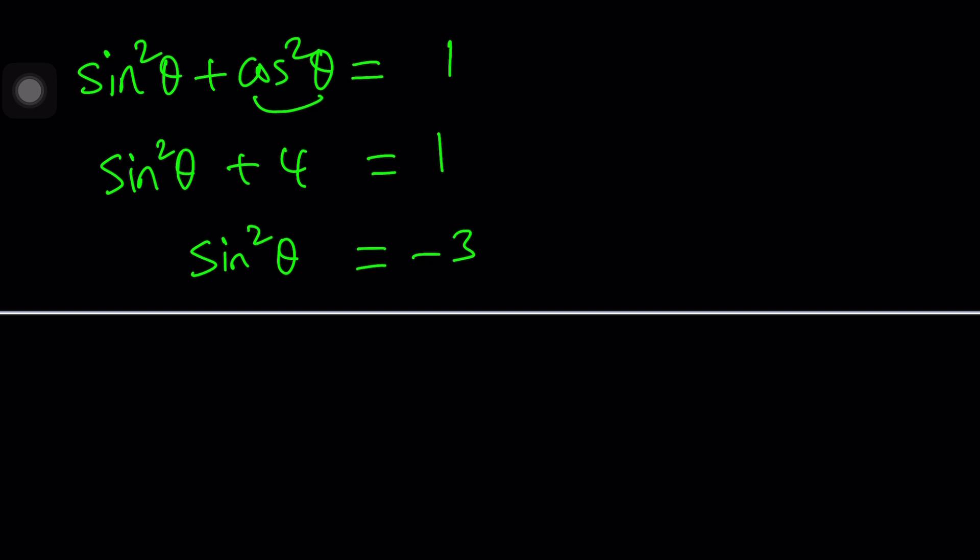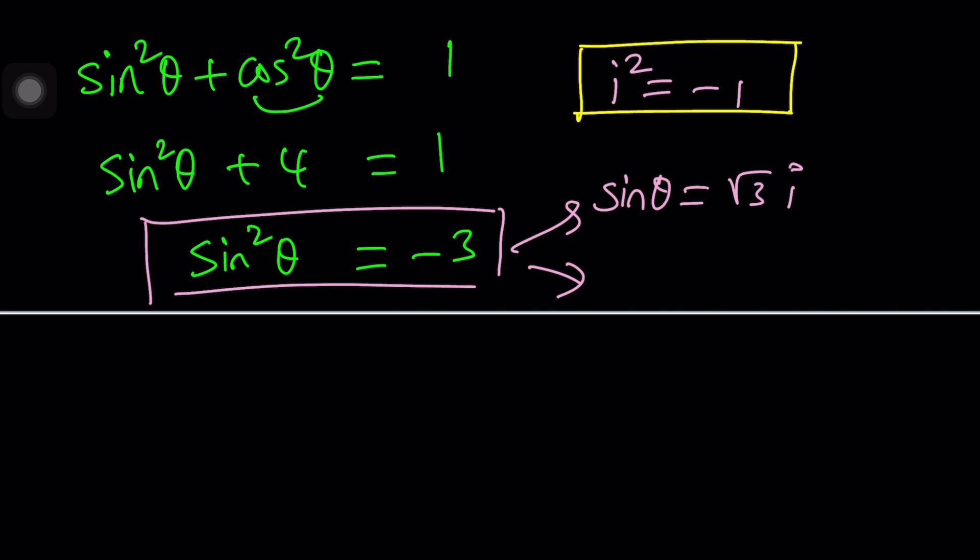Well, who said we're in the real world? We're in a complex world because this channel is about complex numbers. We're going to be looking for complex solutions. That's where the complex numbers come in. Sine theta can be root three i. A number whose square is negative one is i. So i squared is negative one. You should definitely know this. This is the basis of complex numbers, the definition of the imaginary unit.